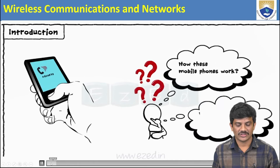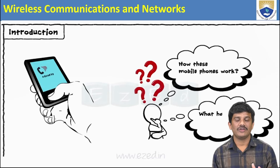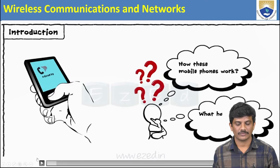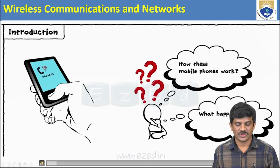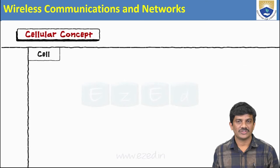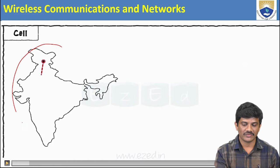Whenever you call another person, how is the system established? For that we need to understand the cellular concept. You need a connection from one end to another. This is the cellular concept of the particular connection — we need cells. This is our geographical area.